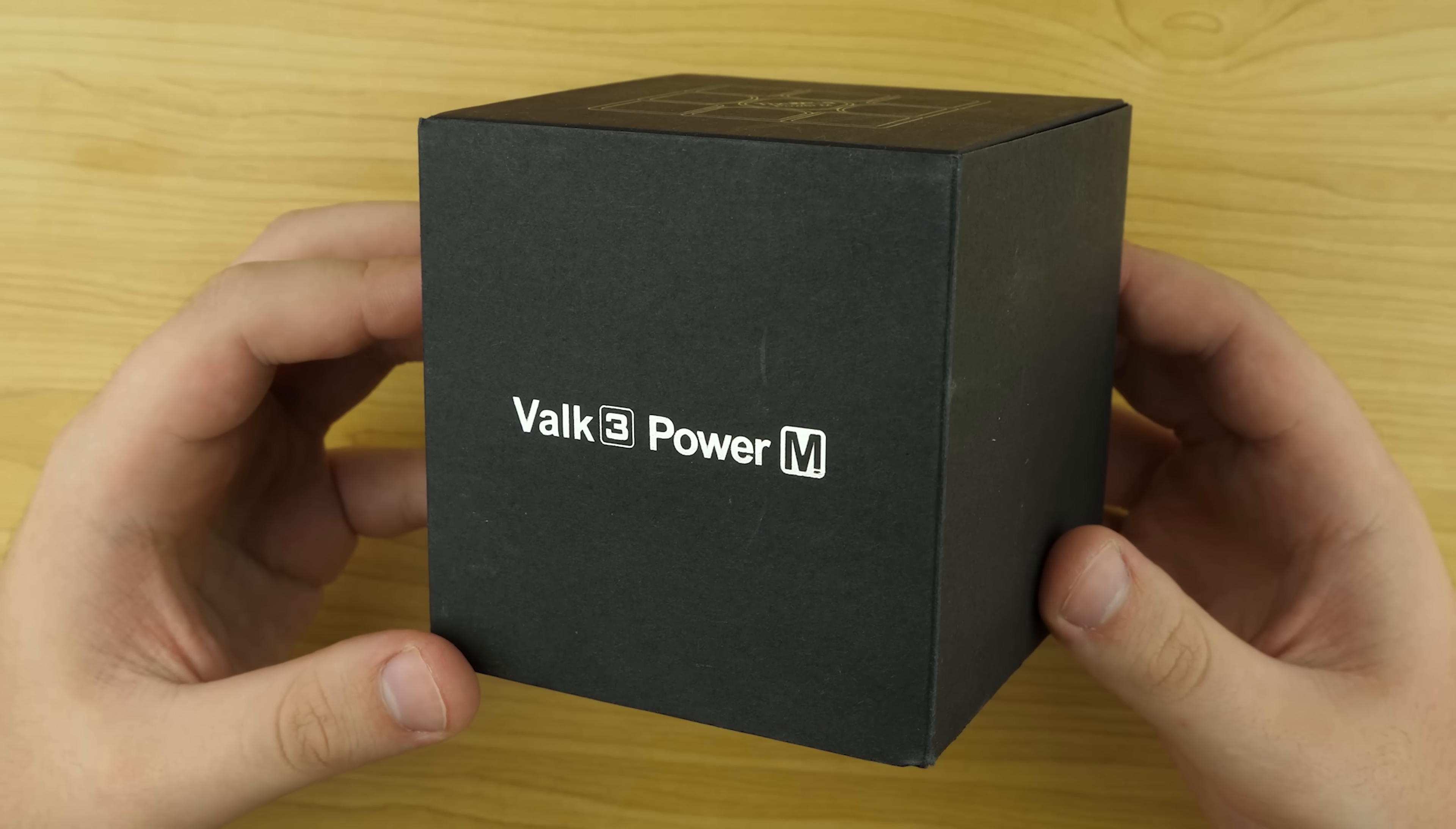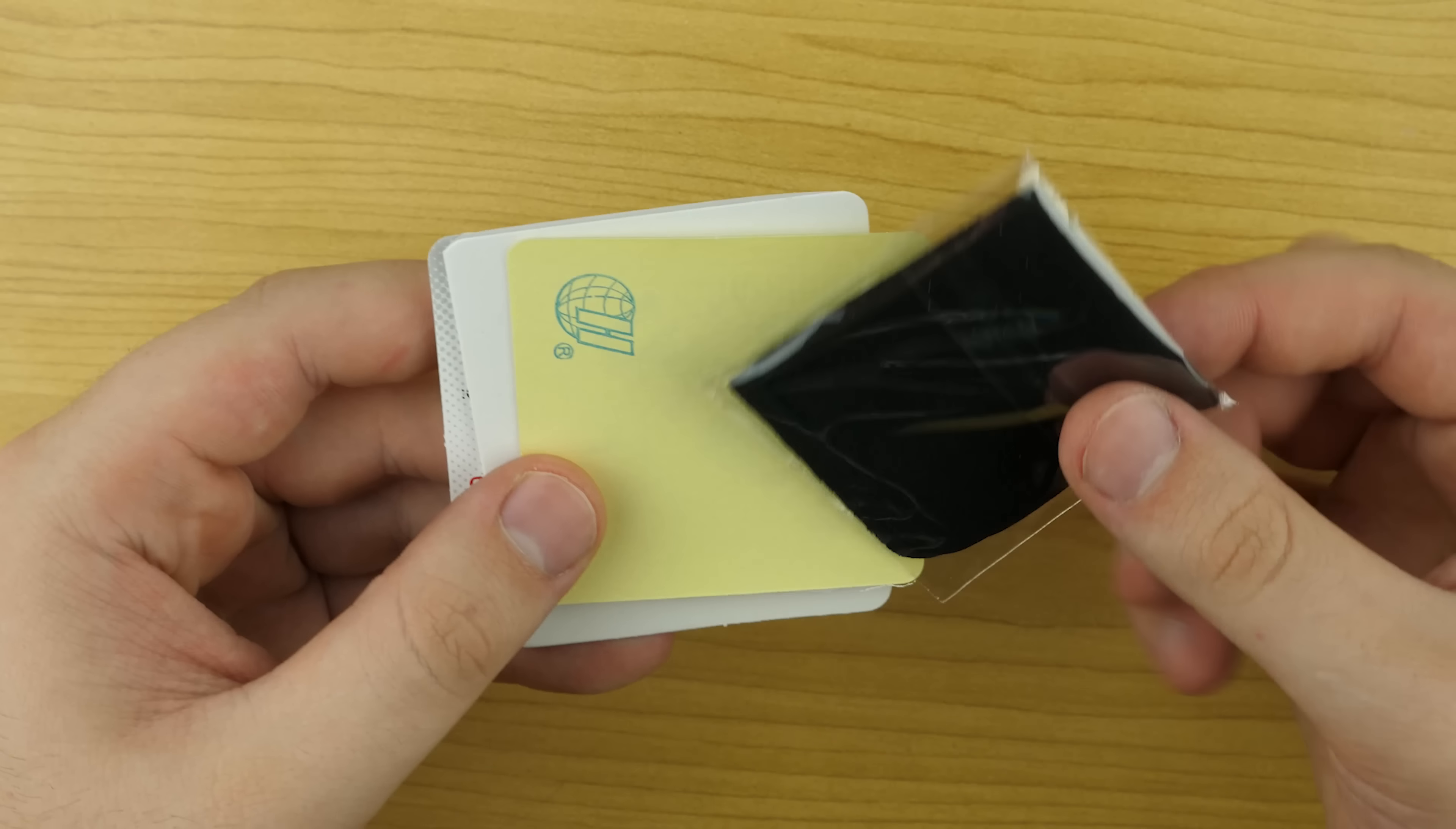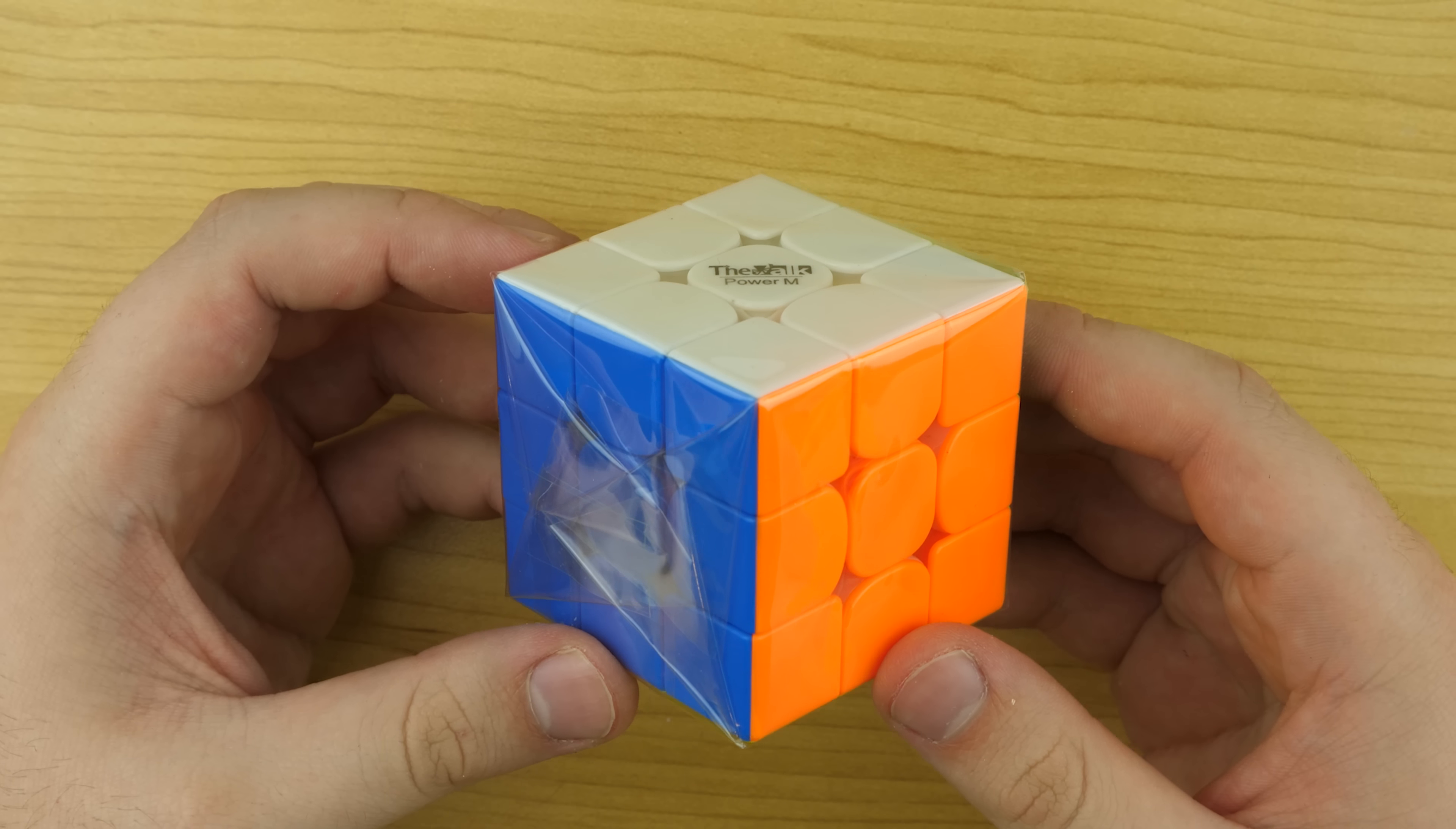The Volk Power is very similar, another sleek black box with a magnetic flap, you also get some postcards, a cleaning cloth but this time you get a sticker and then the cube.